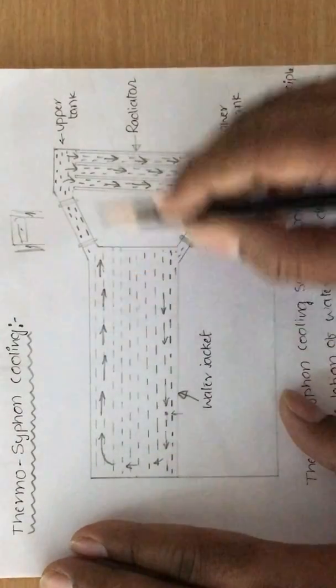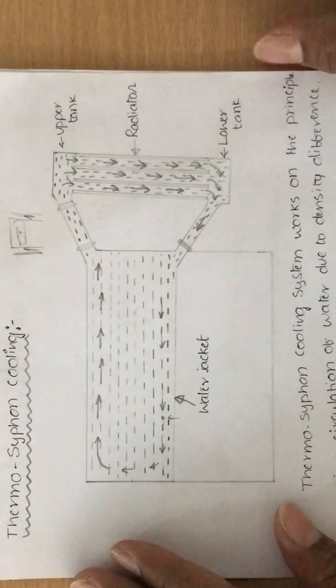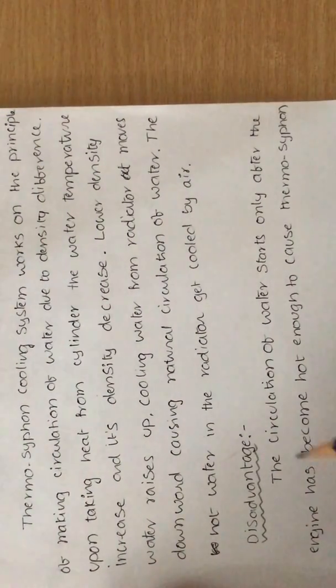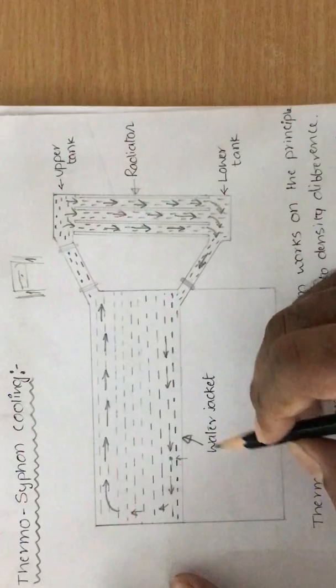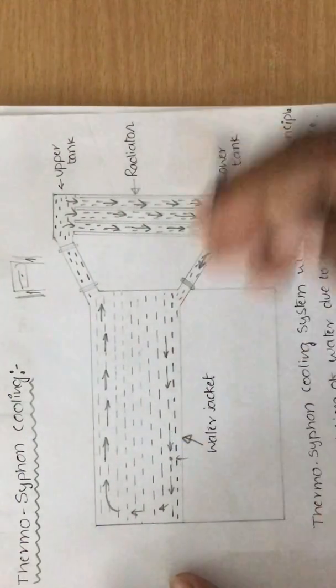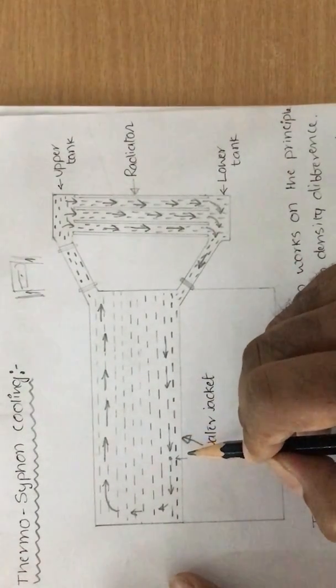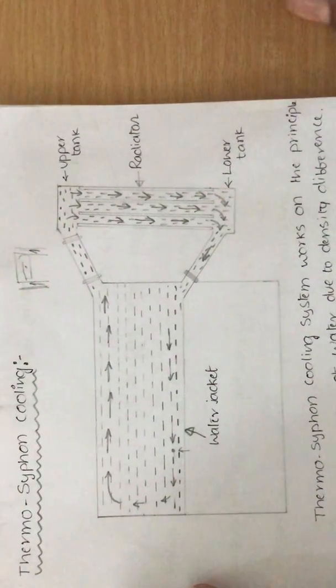So the natural circulation here means there is no pump provided. This thermosiphon cooling system has some disadvantages. The disadvantage is that the circulation of water starts only after the engine has become hot enough to cause the thermosiphon action. That means the circulation starts when the engine gets started and then warms up — the cylinder gets to temperature, and then heat is transferred from the engine to the cooling water. Only then does this action start, which we call the thermosiphon action.